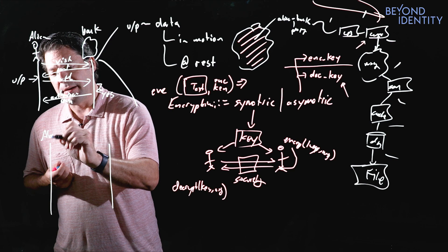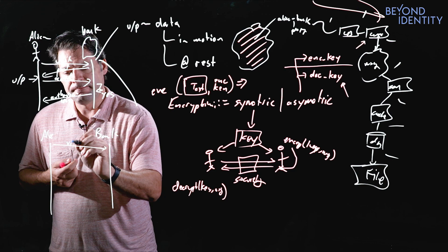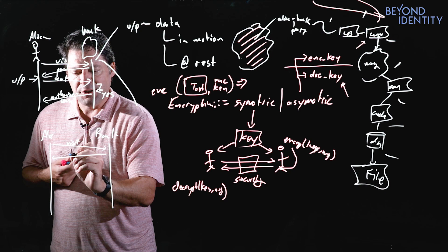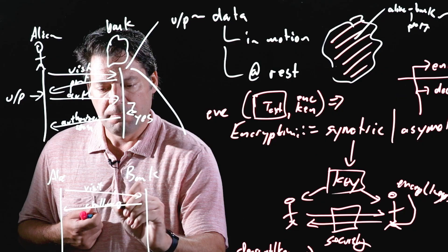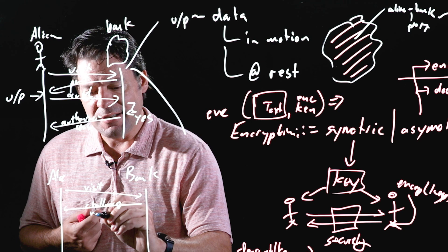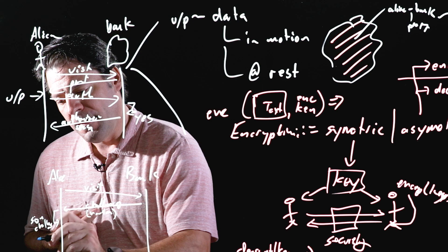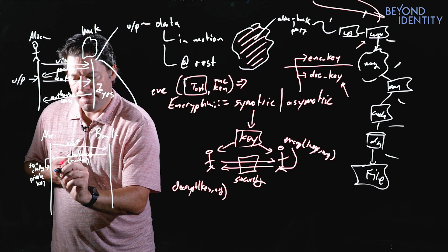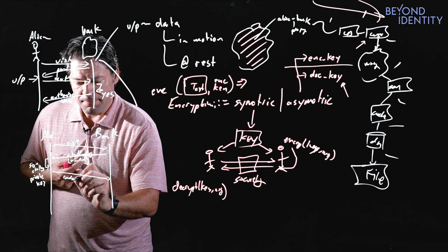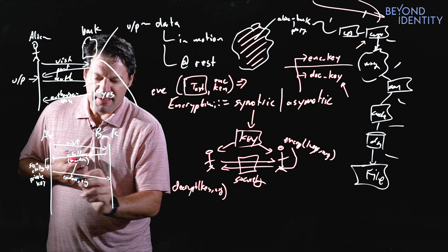Alice wants to access the bank. The bank is going to issue what's called a challenge—we'll simplify it and say it's just a random string. Then Alice is going to sign the challenge with her private key. So it comes back over as that random number and a signature—the signature over the random number.